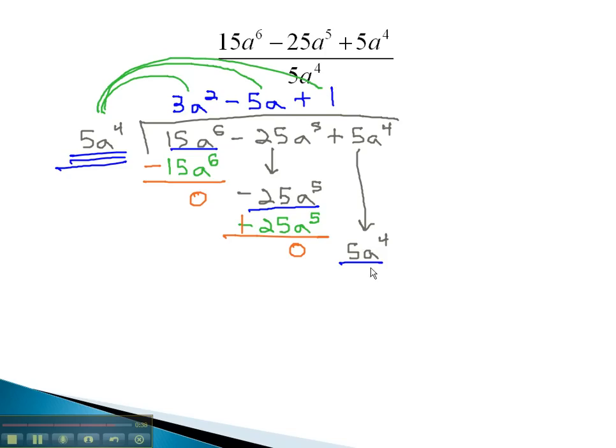Multiplying that 1 by 5a to the 4th, changing the sign, and combining gives us 0. With nothing left to bring down, we get our final answer of 3a squared minus 5a plus 1.